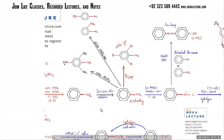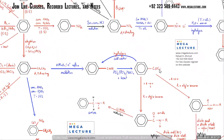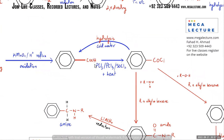So carboxylic acid - where do you have carboxylic acid? You have this one, this reaction over here. So this reaction over here, the carboxylic acid will turn into an acyl chloride if you react it with PCl3 or SOCl2 or even PCl5 plus heat.